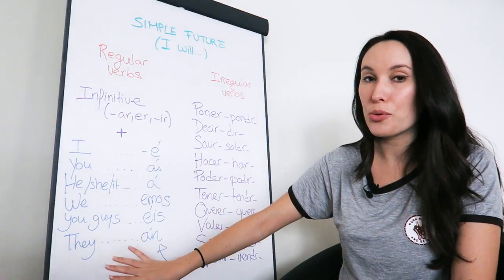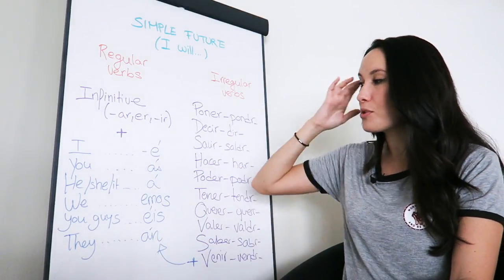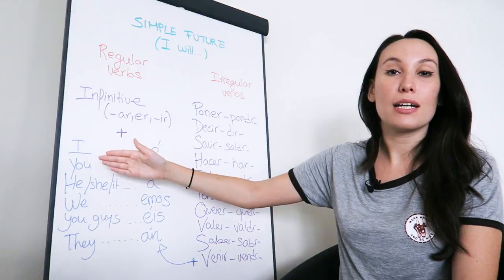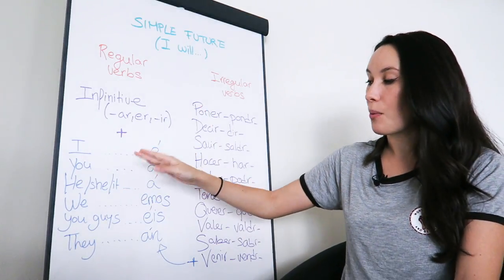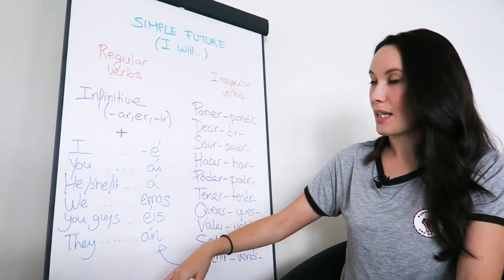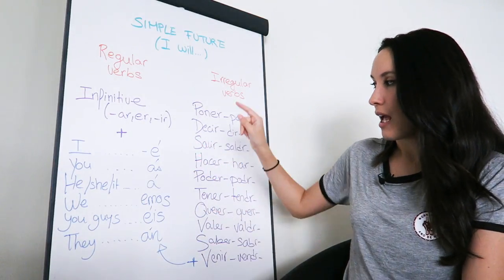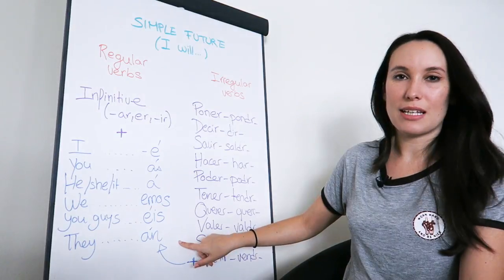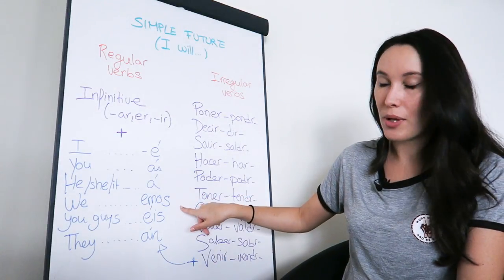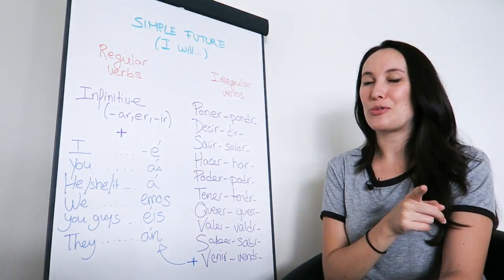Depending on who does the action, I would choose between I, you, he, she, or it, we, you guys, or they. And these are the endings: e, as, a, emos, eis, an. And almost all of these endings have an accent apart from we, emos, so that's something to remember.